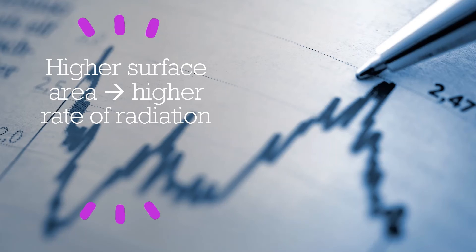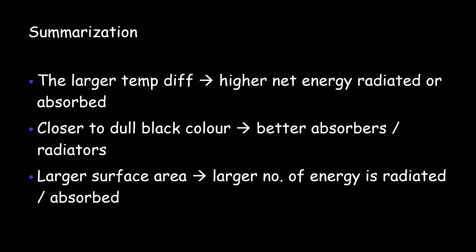In sum, the larger the temperature difference, the higher the net energy radiated or absorbed. The more the colour is close to dull black surfaces, the better the absorber and radiator. The larger the surface area is, the larger the amount of energy radiated or absorbed. Now you know what are the factors affecting radiation.